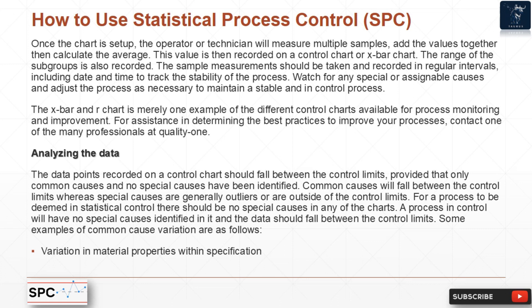The X-bar and R chart is merely one example of the different control charts available for process monitoring and improvement. For assistance in determining the best practices to improve your processes, contact one of the many professionals at Quality One.